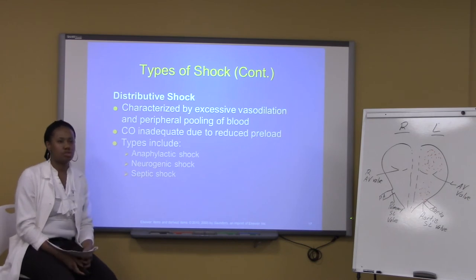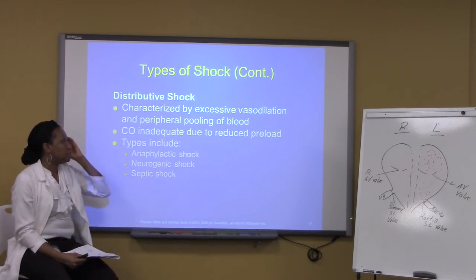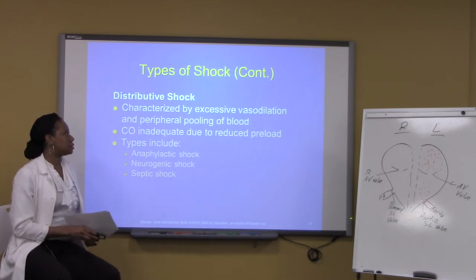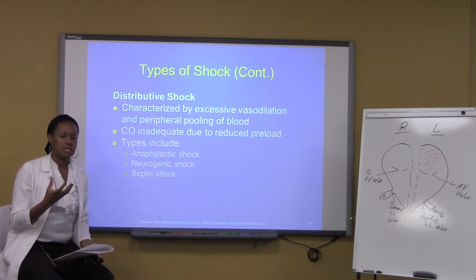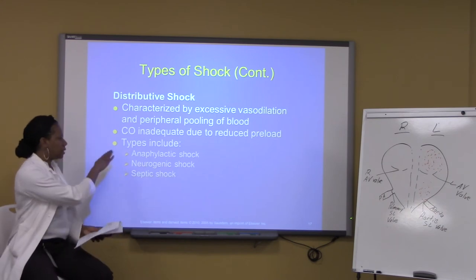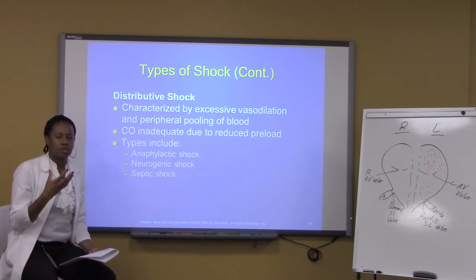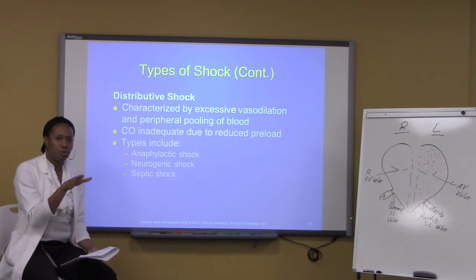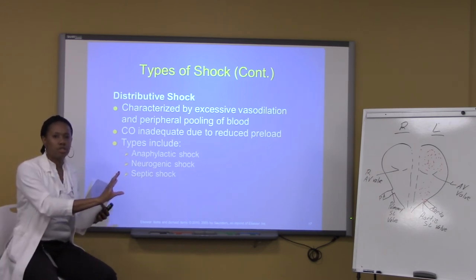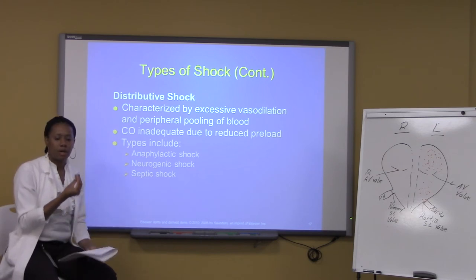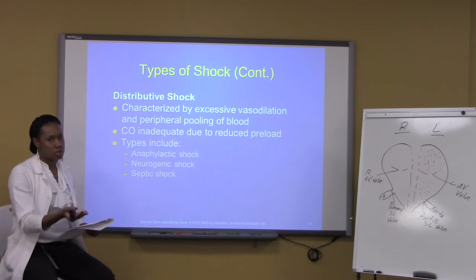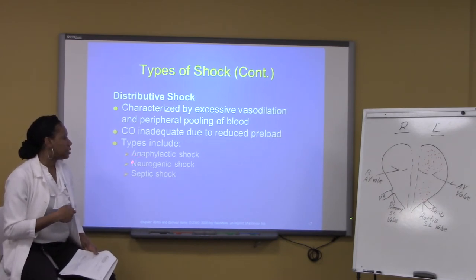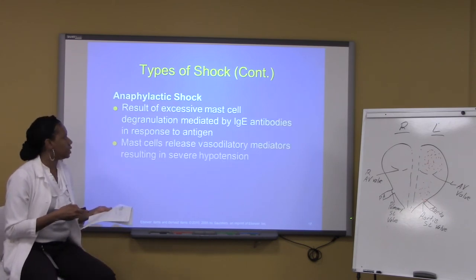Distributive shock is characterized by excessive vasodilation, which causes a pooling of blood. There are different types of shock that fall under this category. The extreme dilation of vessels means there is not enough resistance for blood to move forward, so blood pools and does not move properly — tissues and cells cannot get the adequate blood supply they need. Types of distributive shock include anaphylactic, neurogenic, and septic shock.